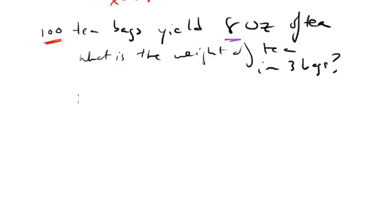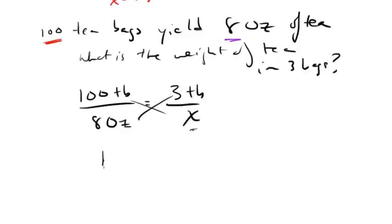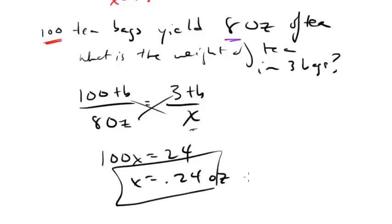So I'll set it up here. 100 TB, tea bags, for every 8 ounces. Well, actually I have 3 tea bags for every x ounces. That's what I want to figure out. And now here we go. I just multiply. I get 100x equals 24. So x equals .24. So it would be .24 ounces. And that's essentially how you work with ratios and proportions.